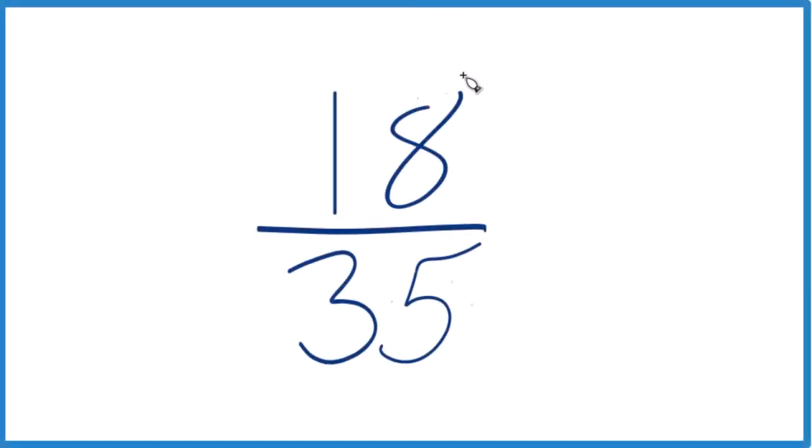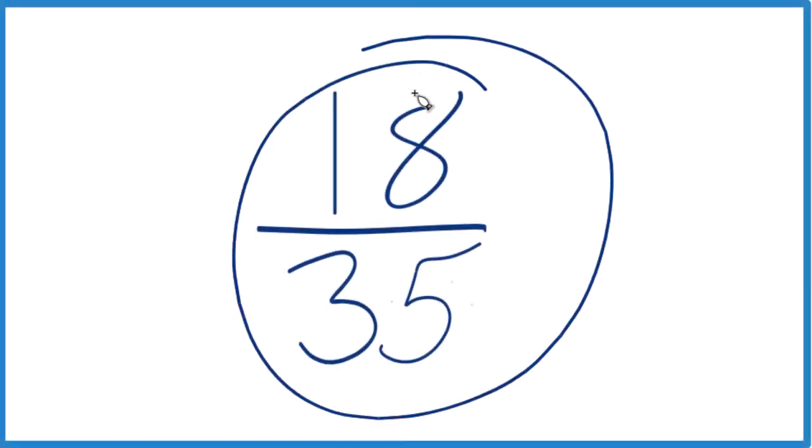So let's simplify this fraction here. We have 18 over 35. We want to get this in lowest terms.